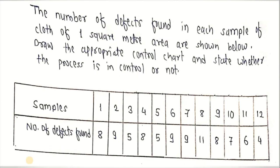The problem states: the number of defects found in each sample of cloth for one square meter area is given. We need to draw the appropriate control chart and state whether the process is in control or not. The chart type is not defined in the problem itself, but based on the number of defects we are going to plot the c chart. Data is given for 12 samples of one square meter area.